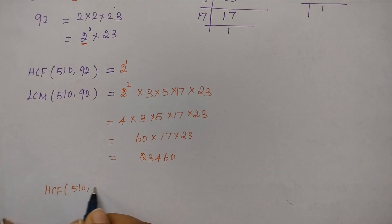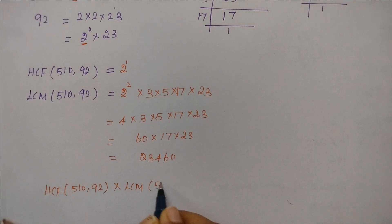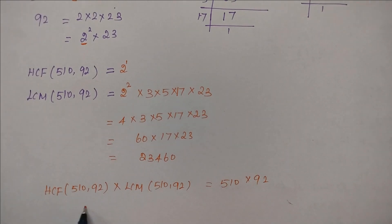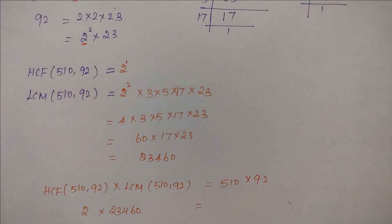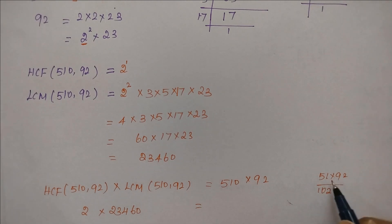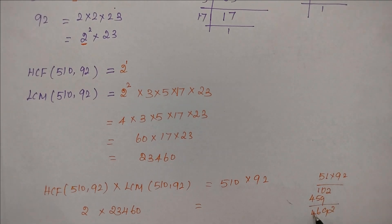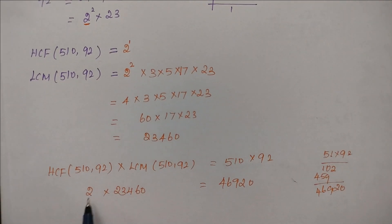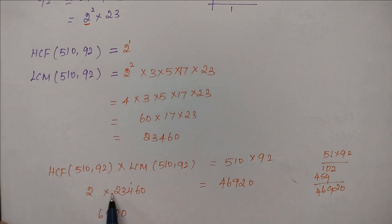We verify: HCF of 510 and 92, multiplied by LCM of 510 and 92, equals the product of the two numbers. HCF is 2, LCM is 23460, and the product of numbers is 510 into 92. Calculating 510×92 and 2×23460 both give 46920, confirming they are equal.